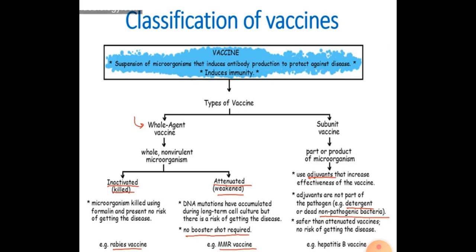Vaccines, as you all know, they are the suspension of microorganism that induce antibody production to protect against disease — that means they induce immunity, as we have already discussed. Now vaccines joh hain woh basically 2 types ki hoti hain: ek whole agent vaccine, ek subunit.